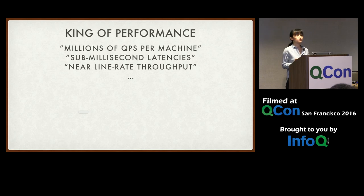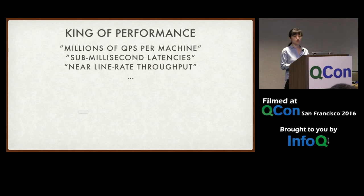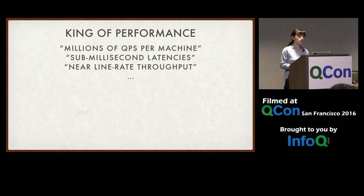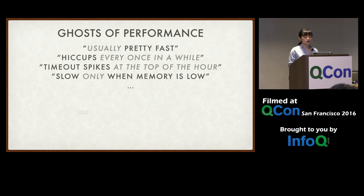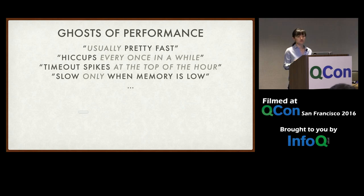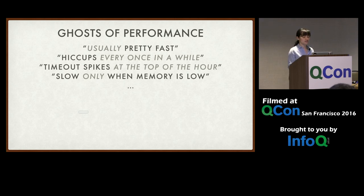The common perception of cache is that it handles millions of QPS on modern hardware, with 200–300 microsecond end-to-end latencies, and it's not hard to saturate the entire network with slightly larger objects. However, if you run a large enough operation — thousands of machines, tens of thousands of instances, running for years — you start to see these ghosts. It is fast, but not always. Sometimes there are hiccups you wonder why they happen or how to get rid of them. Under certain predictable conditions, these problems come back more regularly — these are what I call the ghosts of performance.